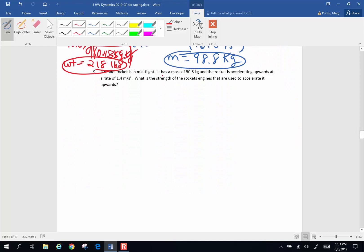A model rocket is in mid-flight. It has a mass of 50.8 kilograms, and the rocket is accelerating upward at a rate of 1.4 meters per second squared. What's the strength of the rocket engines that are used to accelerate it upward? So we want to know a force. Force is our question mark. That's what we want to know. Let's draw a picture so we can kind of get an idea of what's going on here. I've got my little rocket engine. It has a mass of 50.8 kilograms, so it's a pretty hefty toy rocket. It's accelerated upward at 1.4 meters per second squared. We want to know the strength of the rocket engines used to accelerate it upward, so we have a force up, and is that the only force acting on my rocket? It's not. There is also a force down, and that's the force of gravity.